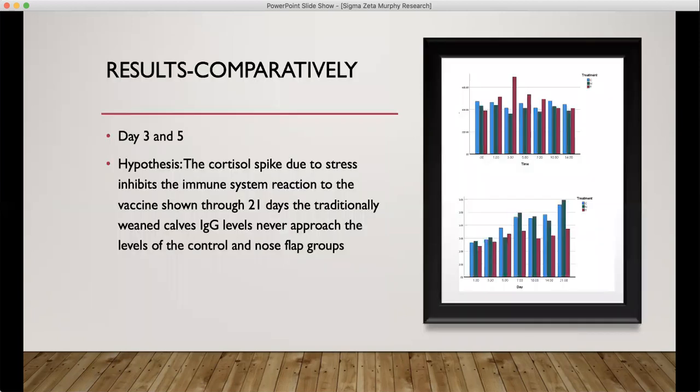When we look at these two results comparatively, we can come to some conclusions. We see a huge difference at day three and day five. We see a peak of cortisol, and following a vaccine, we have a huge amount of cortisol because of stress to the weaning process. So on days that the cortisol is high, we can look to the second figure, and as we look at it, we see that our immune response starts on day seven. So from this, we can hypothesize that the cortisol spike due to the stress inhibits the immune system reaction to the vaccine.